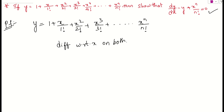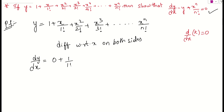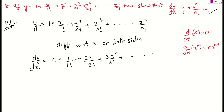If you differentiate y, the left side is dy/dx. We already know the derivative of any constant is 0. The derivative of x is 1. Applying the formula d/dx of x to the power n equals n times x to the power n minus 1: the derivative of x squared is 2x by 2 factorial, x cubed gives 3x squared by 3 factorial, and so on. The derivative of x to the power n gives n times x to the power n minus 1 by n factorial.